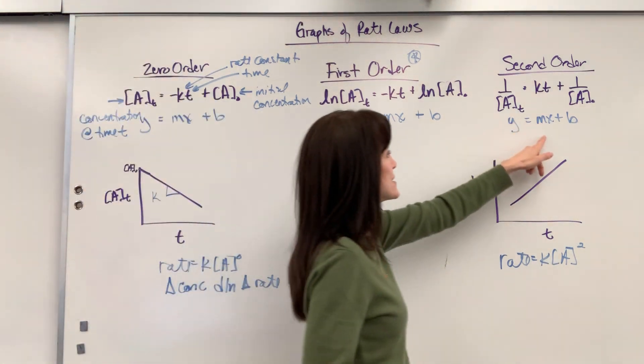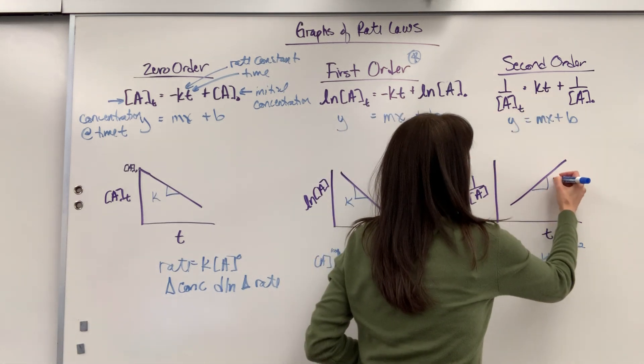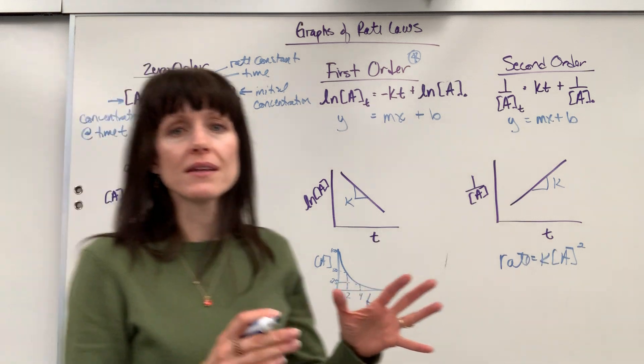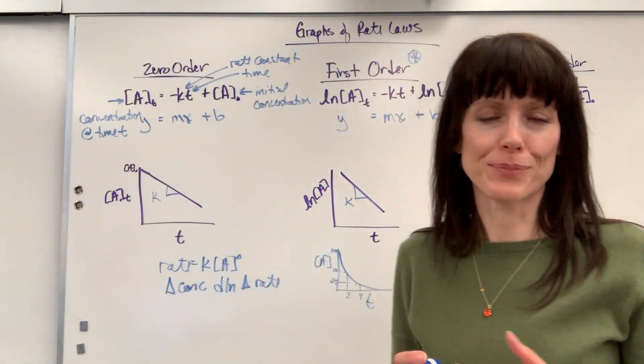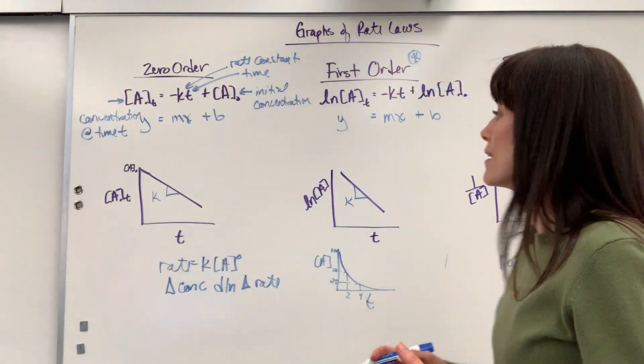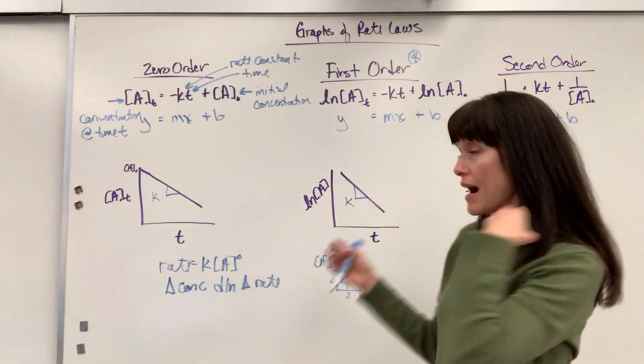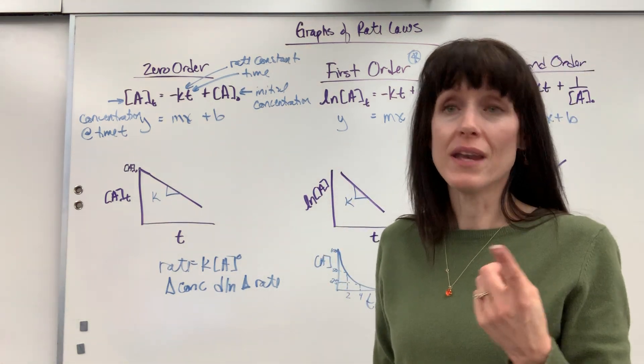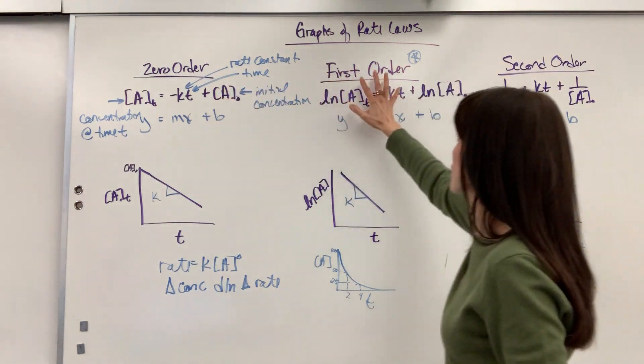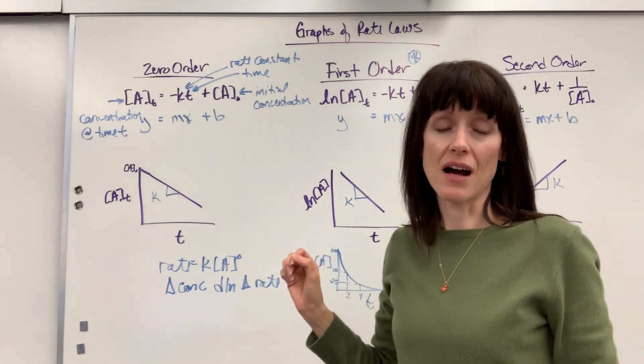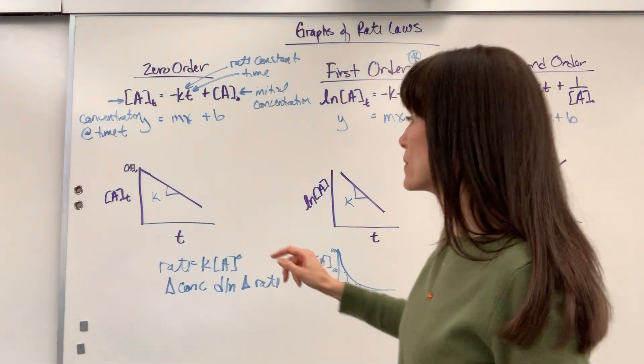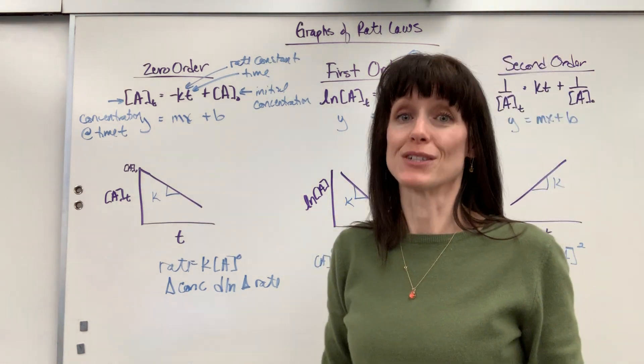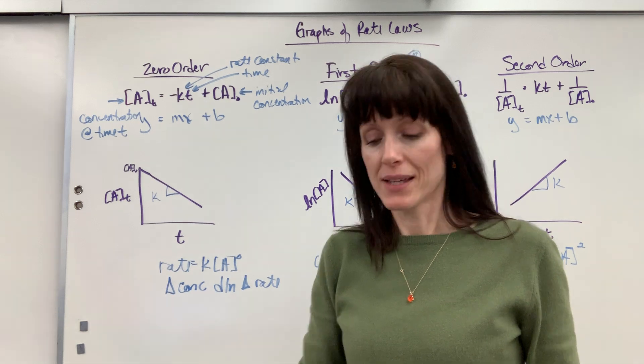Same thing, really cool. Notice our slope is indeed the rate constant K. Something that chemists love, that professors and chemistry teachers love, is giving students these graphs because they're so powerful, expecting you to be able to do two things. Number one, identify is it zero order, first order, or second order rate law? And number two, being able to determine the rate constant just by calculating the slope, rise over run.